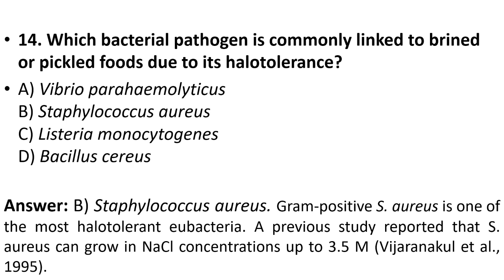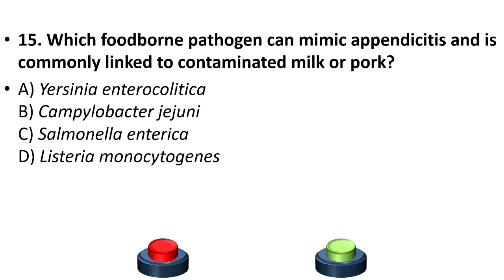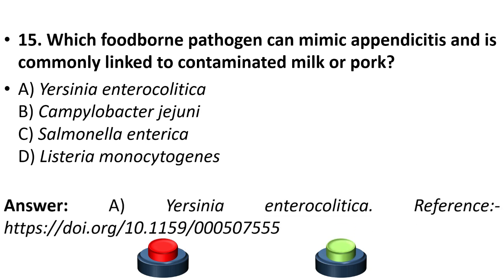Question 15: Which foodborne pathogen can mimic appendicitis and is commonly linked to contaminated milk or pork? Options: Yersinia enterocolitica, Campylobacter jejuni, Salmonella enterica, Listeria monocytogenes. The answer is option A, Yersinia enterocolitica.